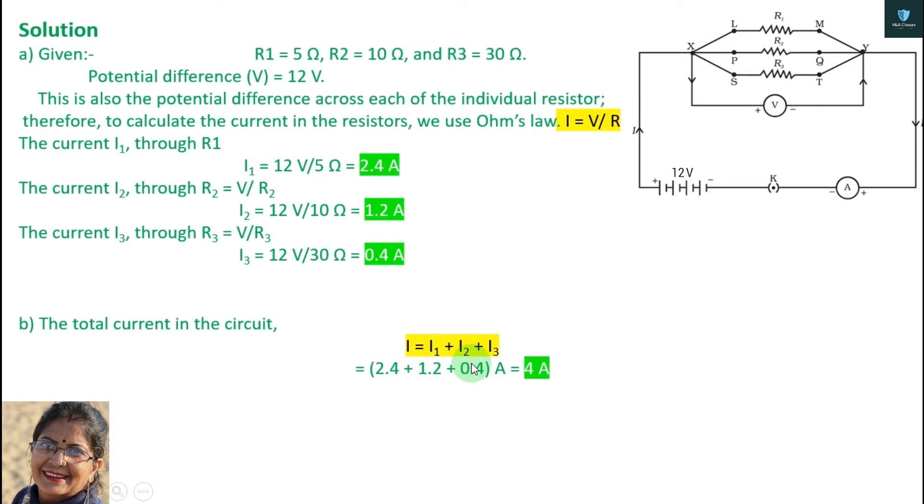Add it. 2.4 ampere, 2.4, 1.2, 1.2, 0.4. We will put it here, we will add it, and the value will be the main current.